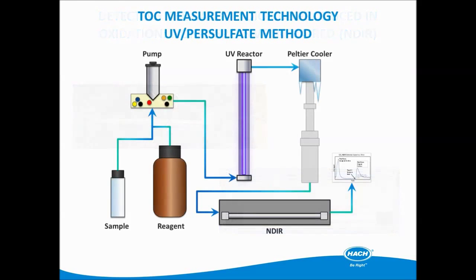The QBD-1200 uses the well-known UV persulfate method, which follows EPA method 415.3 and standard method 5310C. While other analyzers use two separate reagents, the QBD-1200 uses a single combined reagent. Our analyzer does not require a separate module or process for removing total inorganic carbon — the UV lamp does not turn on until all of the TIC is removed.